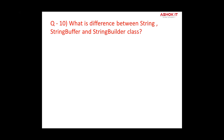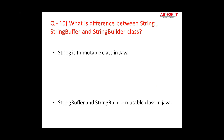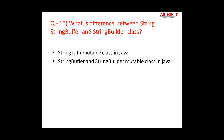Question ten: What is the difference between String, StringBuffer, and StringBuilder? String is an immutable class — immutable means you can't change it. StringBuffer and StringBuilder are both mutable classes. Another difference: StringBuffer is a synchronized class where StringBuilder is non-synchronized. Synchronized means StringBuffer is thread-safe where StringBuilder is not thread-safe.